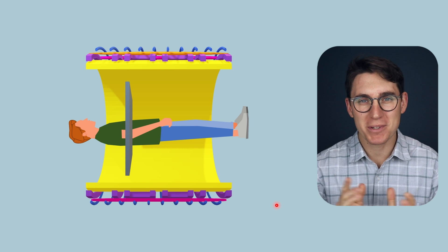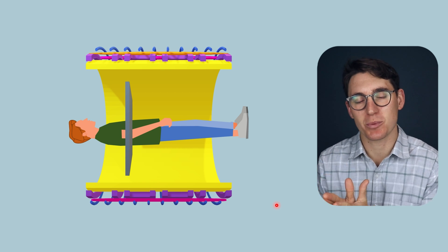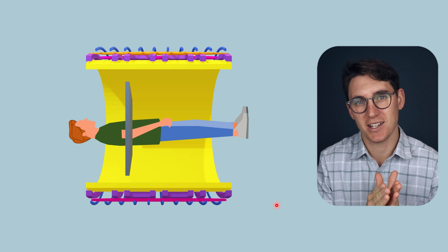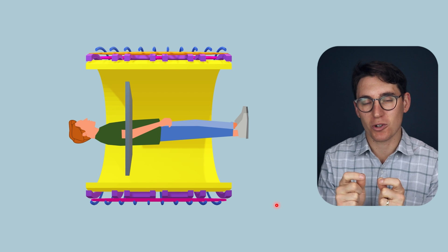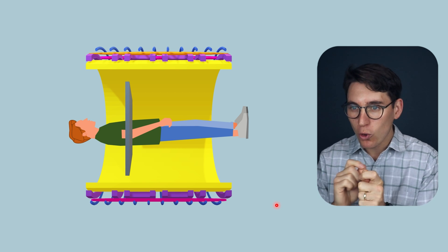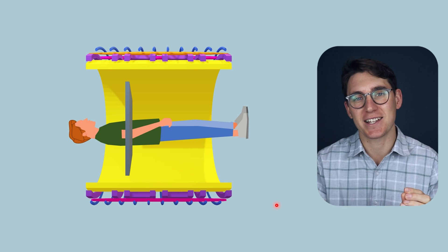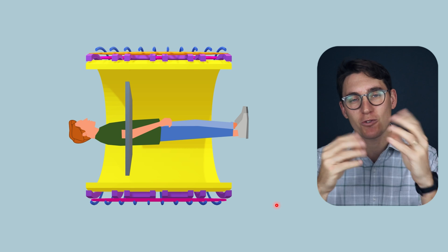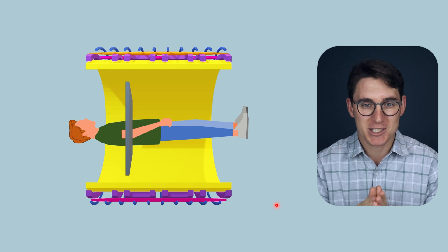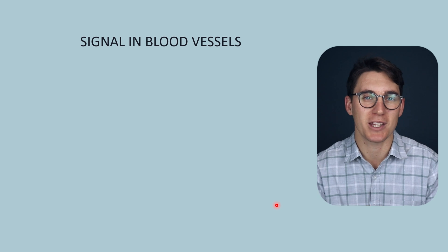Hello everybody and welcome back. Up until now we've assumed that the tissue within the slice that we're trying to image has remained stationary throughout the pulse sequence. In the next few talks I want to focus on what happens when tissues move into and out of the slice or through the slice whilst we're acquiring the data and entering that data into k-space and ultimately transforming that into the MRI image. Specifically I want to focus on blood vessels and what the signal will be within blood vessels.